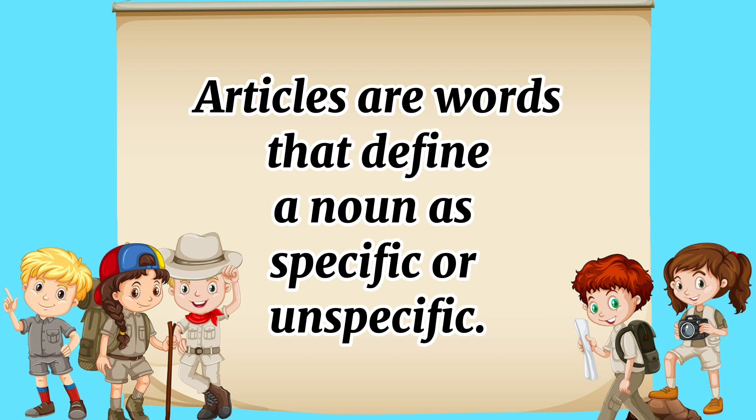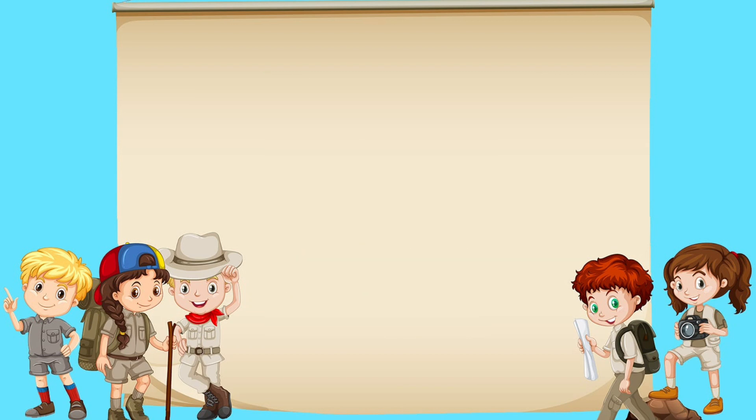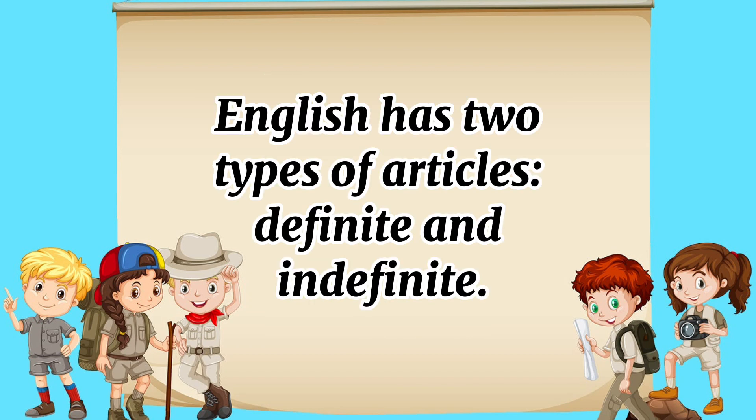Articles are words that define a noun as specific or unspecific. English has two types of articles: definite and indefinite.